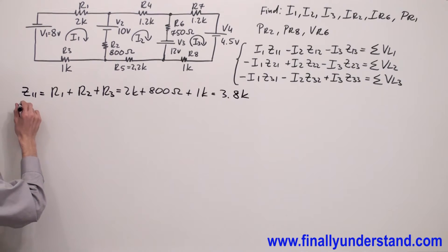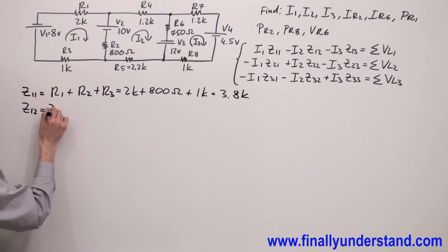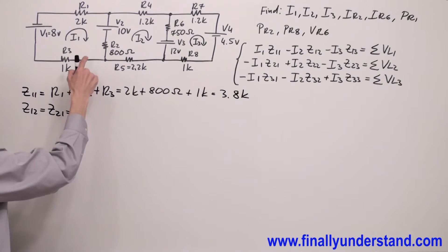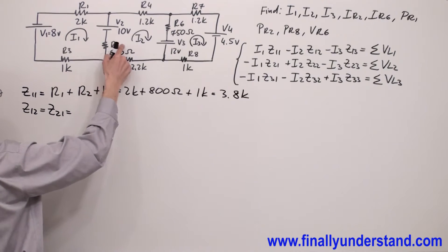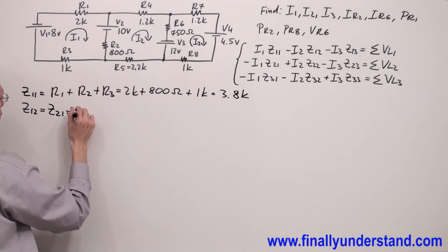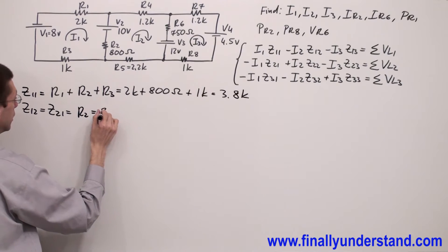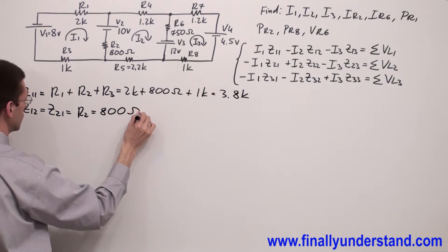Next I'm supposed to find Z12, which is going to be equal to Z21. This is the resistor between these two loops — this is R2. Z12 equals R2, which is equal to 800 ohms.